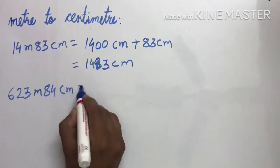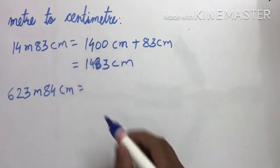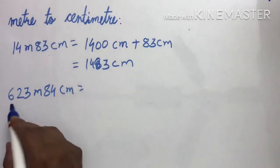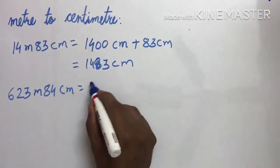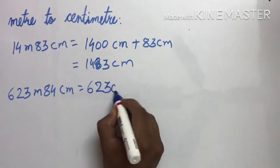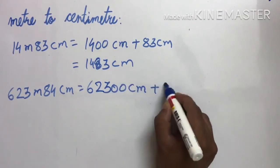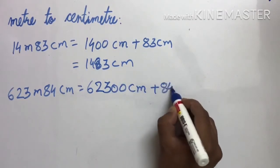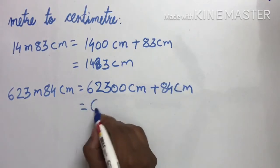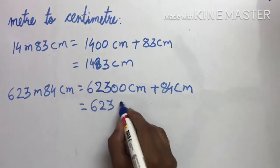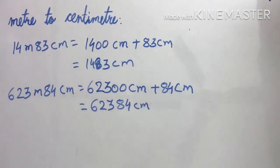आगे number दिया है उसके पीछे 2 zeros डाल देना है। तो 623 meter and 84 cm — 62,300 cm. अभी ये cm में चेंज हो गया। Plus ये तो cm में ही है तो उसको as it is लिखना है — just 62,384 cm. Understood?